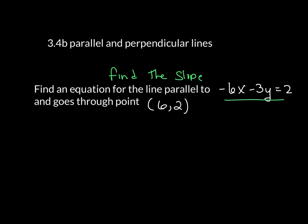We're going to do that by putting that in y equals mx plus b first. So I have negative 6x minus 3y equals 2. I move the 6x over by adding 6x to both sides. When you write that, it becomes negative 3y equals 6x plus 2 because you can't combine those like terms.